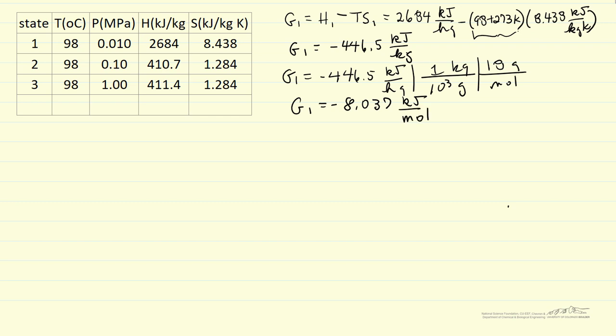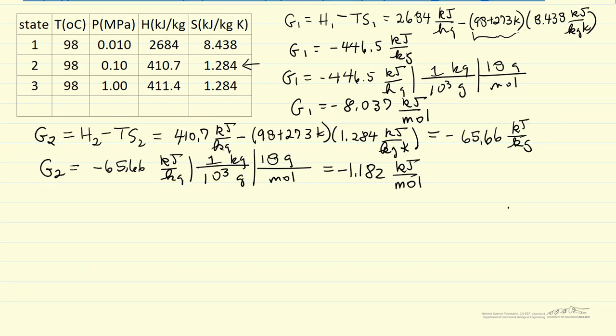So now to calculate, I'm going to do the same thing for G2 and then later for G3. Let's do it for G2. I'm going to pause so I can substitute in the same numbers, the values from this line in the table. So I've calculated G2 the same way, converted G2 into kilojoules per mole.